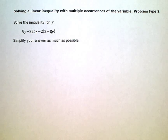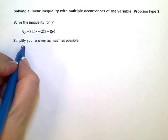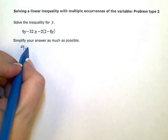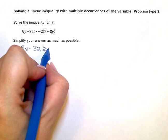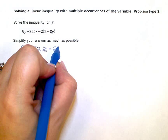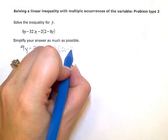Solving a linear inequality with multiple occurrences of the variable, problem type 2. I want to solve the inequality for y and simplify my answer as much as possible. I'm going to go ahead and rewrite the inequality down here: 9y minus 32 is greater than or equal to negative 2 times the quantity 2 minus 8y.